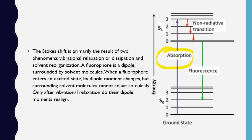From the higher state, the molecule dissipates some energy and moves to a lower state through non-radiative transitions. The transition for emission does not take place from the higher state — it takes place from the lower state. The lower state means the emitted energy is shifted to lower energy.